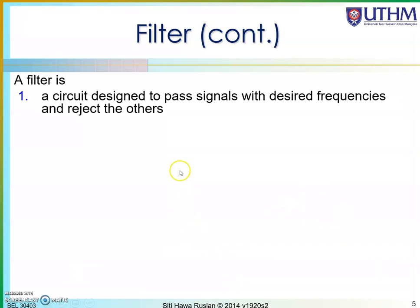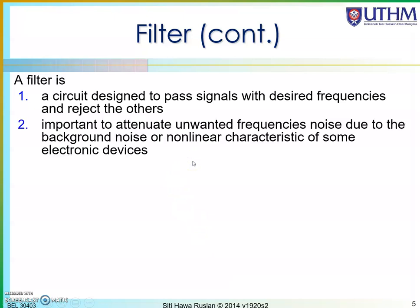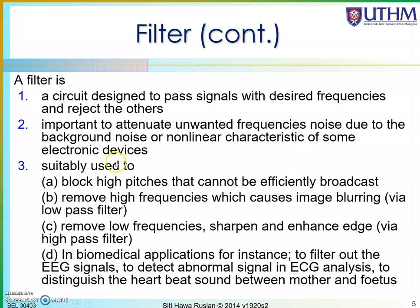A filter is used to pass signals at the frequency we want. The unwanted signal is usually a frequency coming from noise, so we eliminate or filter it out. For example, a filter can be used to block high pitch signals in a broadcast. Sometimes a certain frequency is removed because it blurs images — we use a low pass filter for that. At low frequencies, a filter can sharpen and enhance edges of a picture.